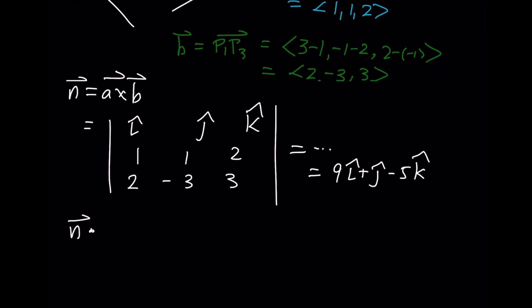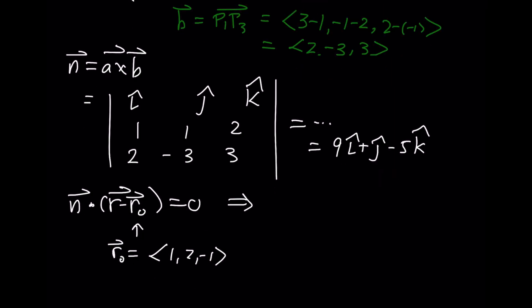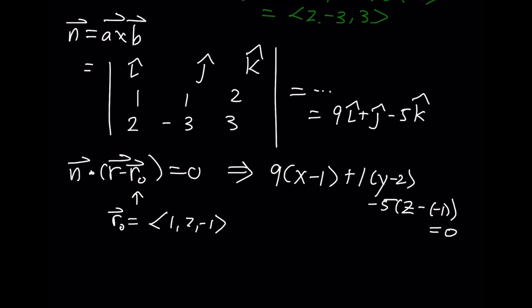And now we can take any of the vectors that we'd like to be R₀. So let's take R₀ to be corresponding to the first point: <1, 2, -1>. I'll have 9(x - 1), 1(y - 2), and -5(z - (-1)) = 0. Which, if you simplify everything down, we'll get 9x + y - 5z = 16.